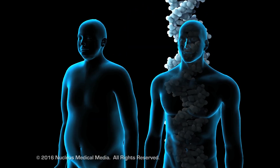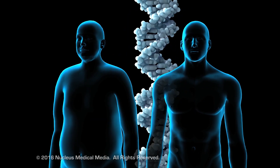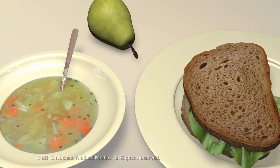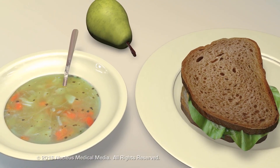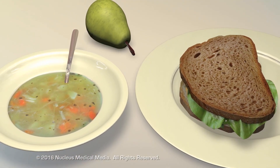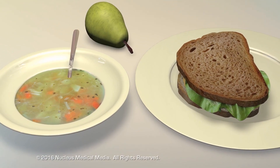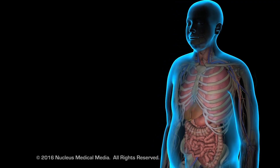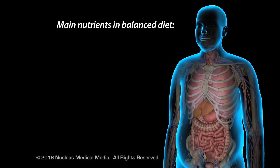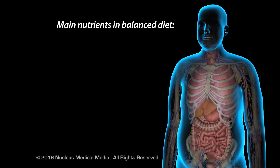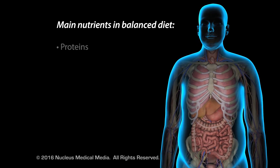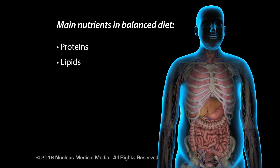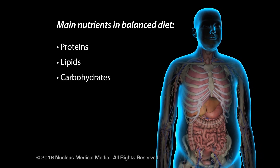While genetics play an important role in determining body weight, a properly balanced diet plays an important role in keeping weight under control and maintaining body function. The three main nutrients in a balanced diet are proteins, lipids, and carbohydrates.